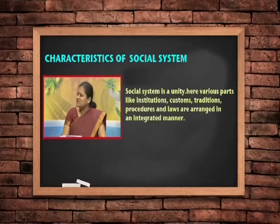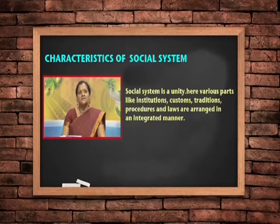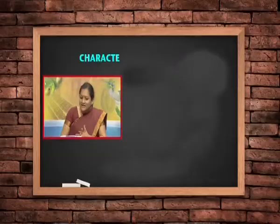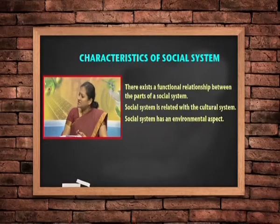As a unity, various parts of the system — institutions, customs, traditions, value preferences, laws — are arranged in an integrated manner. All parts are integrated in a whole, and there is a functional relationship existing between these parts. All parts are in fact functionally interdependent upon each other.